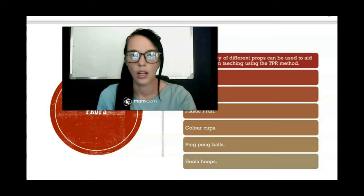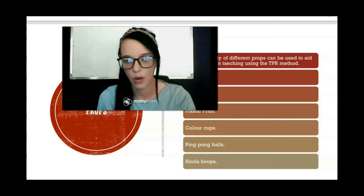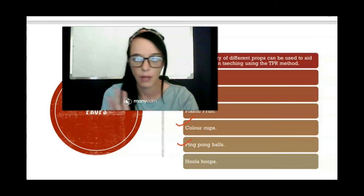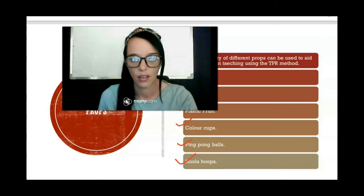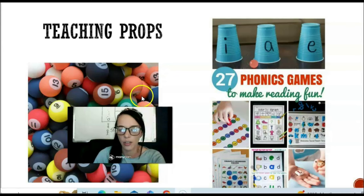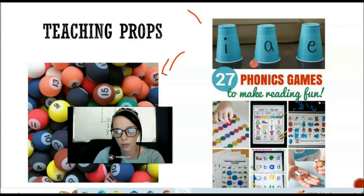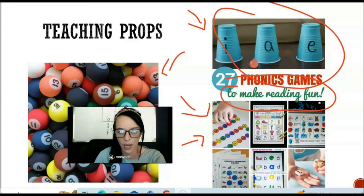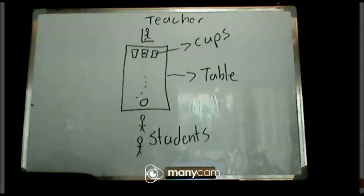Other props you can use include bouncy balls — that sometimes gets out of hand but it's quite fun — plastic fruit, realia, color cups, ping pong balls, and hula hoops. For example, bouncy balls and cups can be used for phonics. There are also a lot of flashcard games like Snakes and Ladders that you can print out and hand to students — you don't need to have the actual board game available.